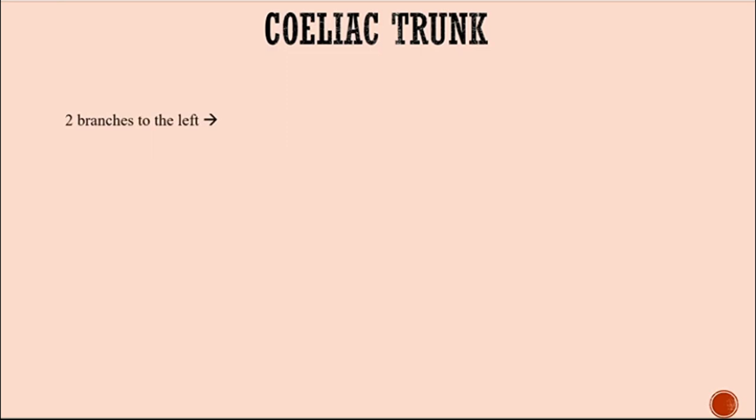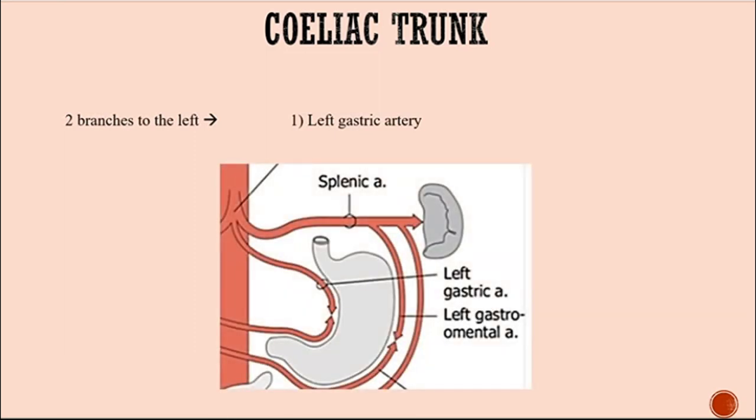Starting with the celiac trunk, you have one branch that goes to the right and two that go to the left. Starting with the two branches to the left, the first one is the left gastric artery. It gives branches to the esophagus and to the lesser curvature of the stomach. Later, it will anastomose with the right gastric artery.